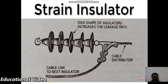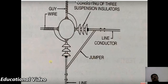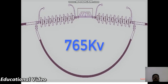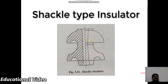The strain insulator is specially used where the line takes a turn — for example, at river crossings or direction changes. The configuration consists of three suspension-type insulators connected together with a line jumper formed at that point. The same principle allows the line to withstand up to 765 kV.